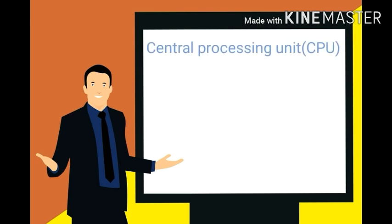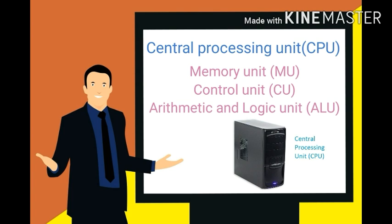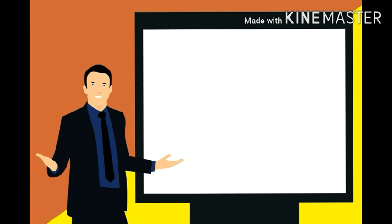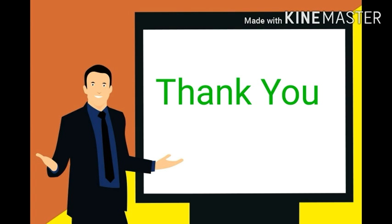So now I think you have understood about the parts of CPU. CPU को ही हम processing unit बोलते हैं। In this video we have learned about the processing unit, which is the CPU, and its three parts: MU, CU, and ALU, along with their functions. Dear students, if you have any doubt, then once again watch the video carefully. Thank you so much and have a nice day.